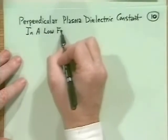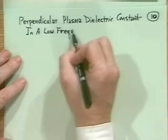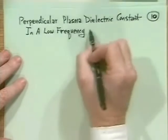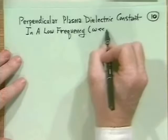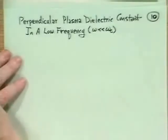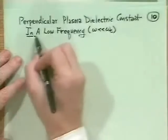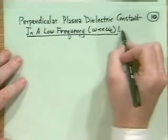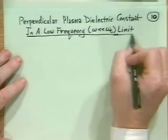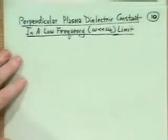It's a very important example. And what do I mean by low-frequency? Well, low-frequency compared to the cyclotron frequency, so the particles can gyrate around the field line quite easily. Low-frequency limit. And this is, again, a pretty important example.